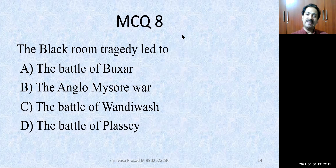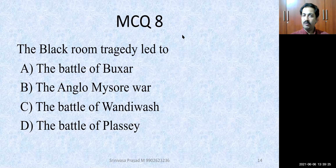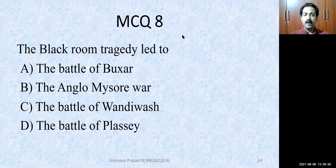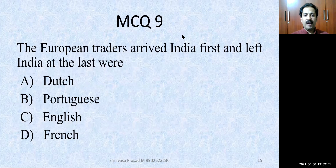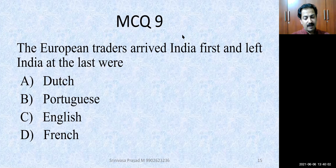MCQ number 8: The black room tragedy led to — the Battle of Buxar; the Anglo-Mysore War; the Battle of Wandiwash; or the Battle of Plassey. The correct answer is the Battle of Plassey. The black room tragedy, where nearly 123 British people were killed in a small room with no proper ventilation, resulted in the Battle of Plassey where Siraj ud-Daulah was arrested and killed. MCQ number 9: The European traders who arrived in India first and left India last were none other than the Portuguese.